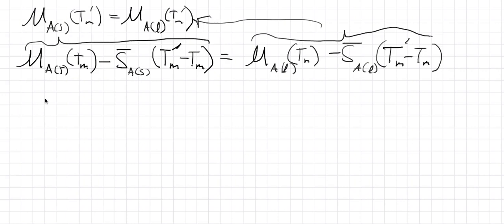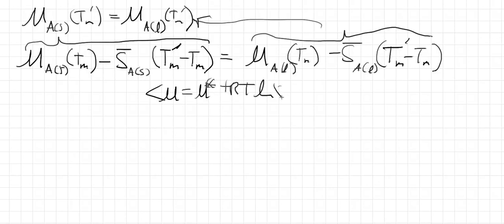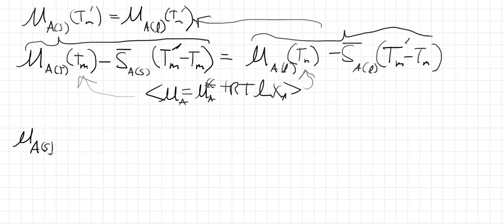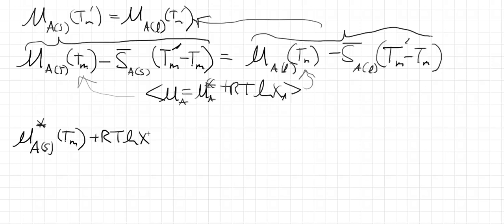Now we relate the solution chemical potentials to pure chemical potentials using the ideal solution equation: μ_A = μ*_A + RT ln(x_A). We substitute this in for both the solid and liquid terms, giving: μ*_A(solid, Tm) + RT ln(x_A,solid) - S_A(solid)·ΔT = μ*_A(liquid, Tm) + RT ln(x_A,liquid) - S_A(liquid)·ΔT, where ΔT = Tm' - Tm.